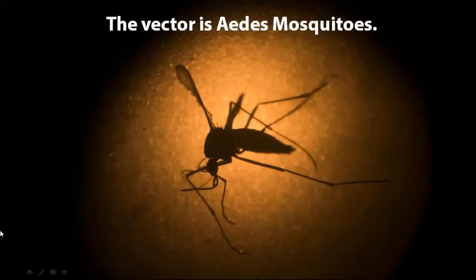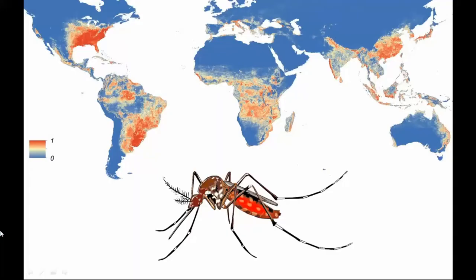Dengue is transmitted between people by the mosquitoes Aedes aegypti and Aedes albopictus, which are found throughout the world. Insects that transmit disease are known as vectors, so the vector for Dengue is the Aedes mosquito. This mosquito is a tropical and subtropical species widely distributed around the world, mostly between latitudes of 35 degrees north and 35 degrees south.